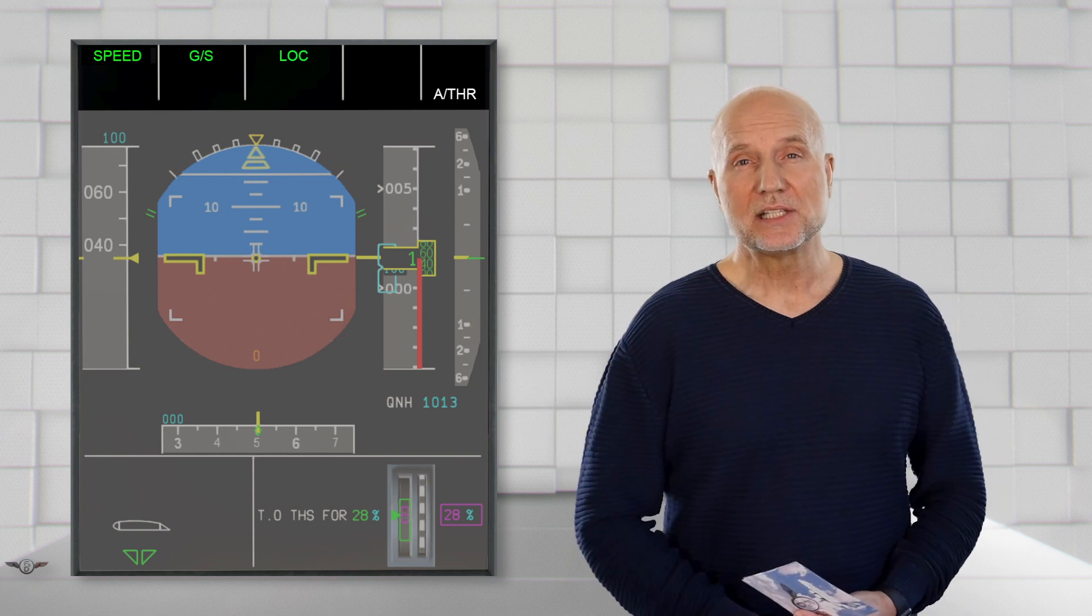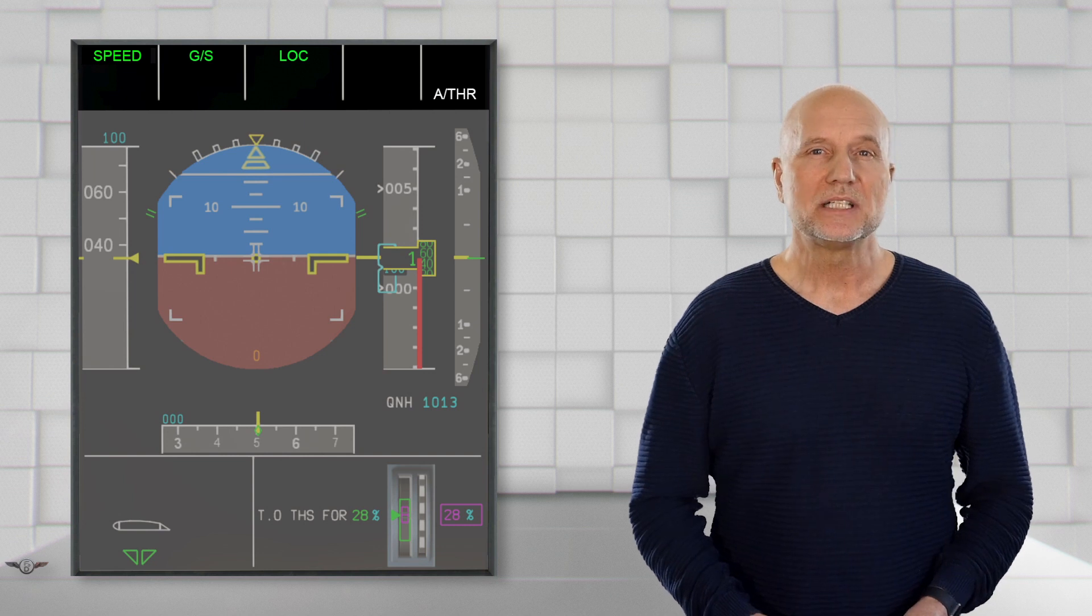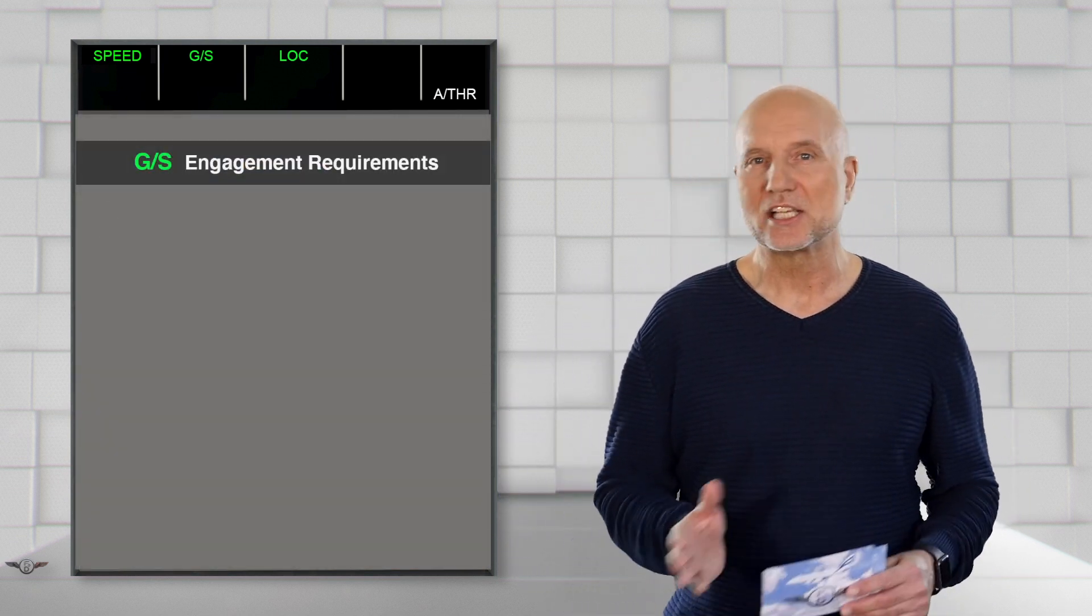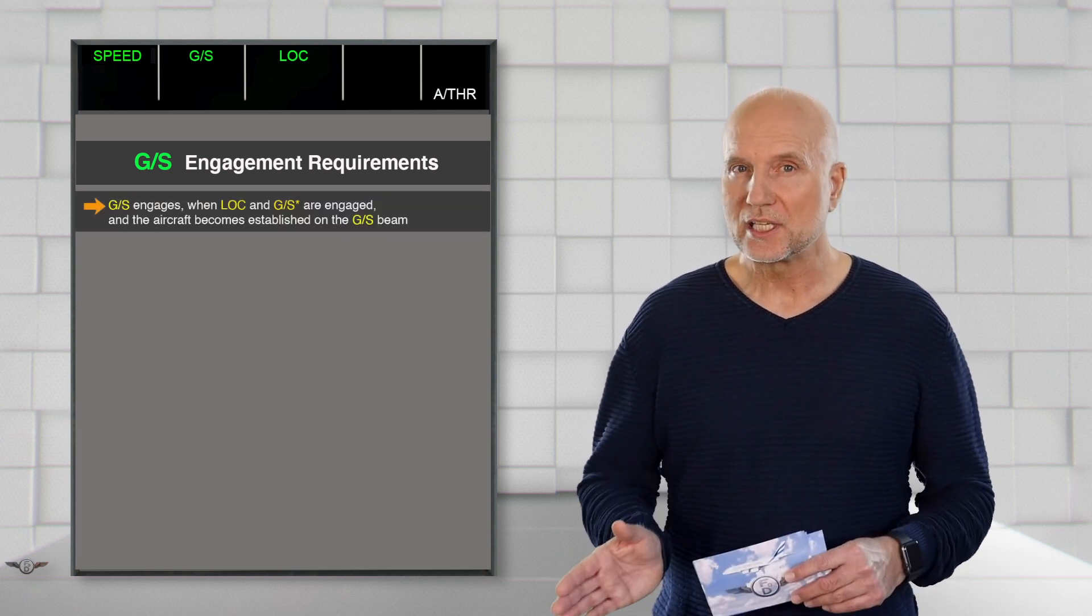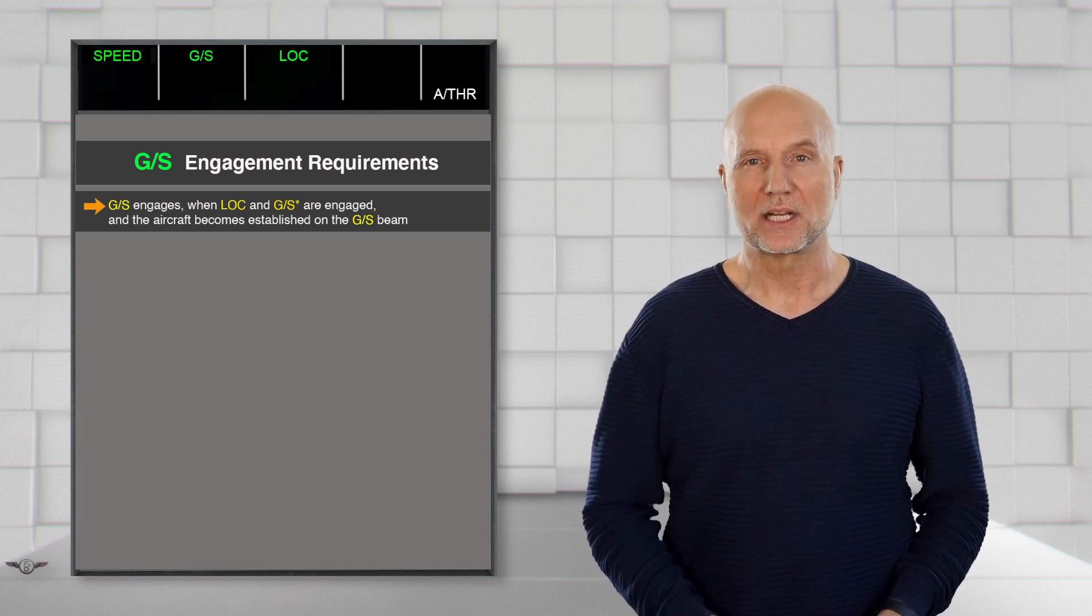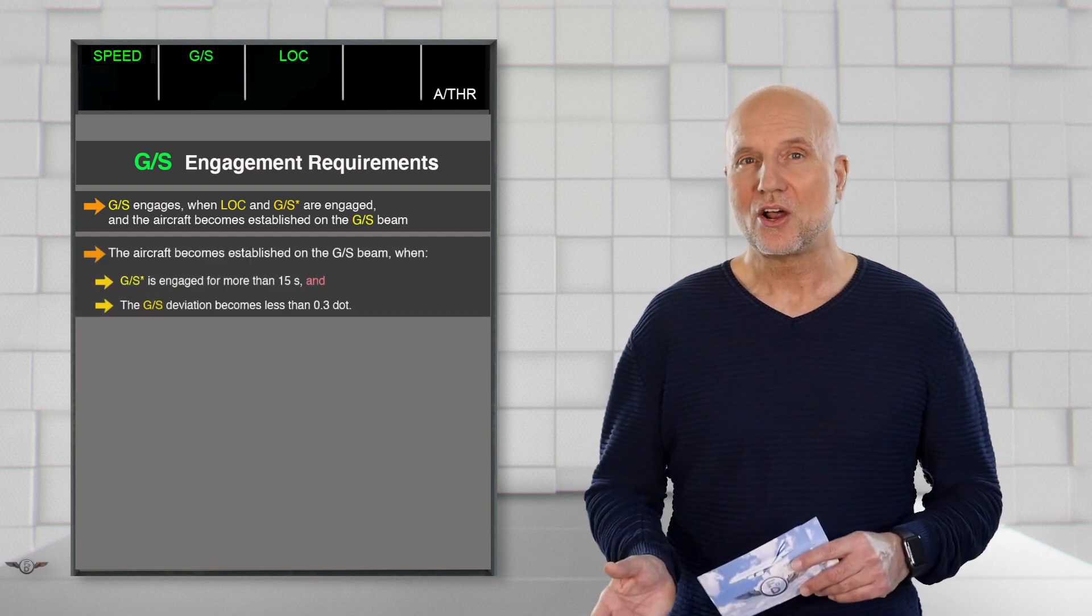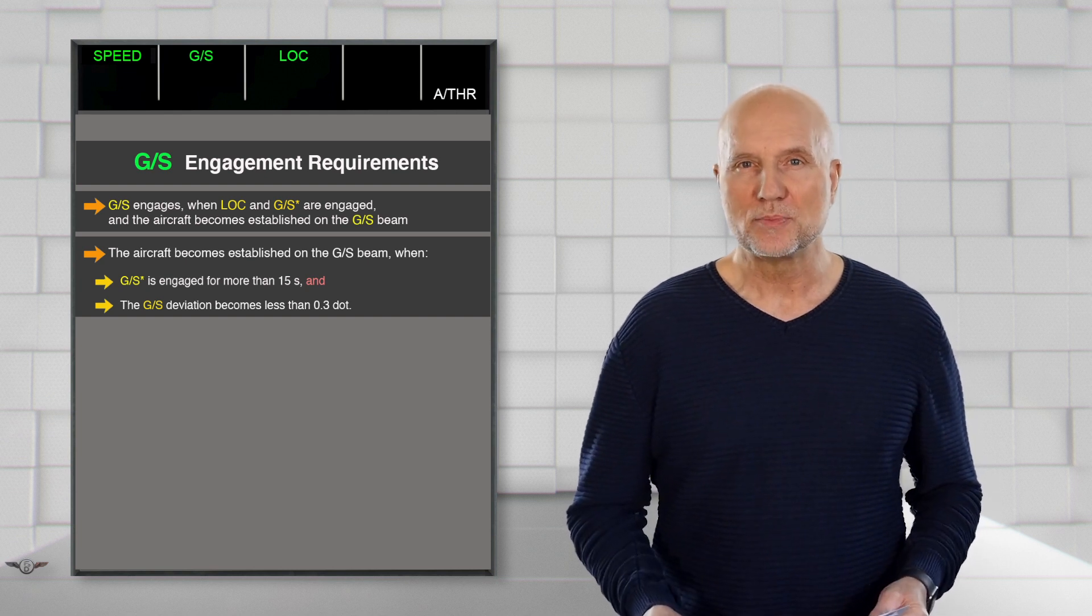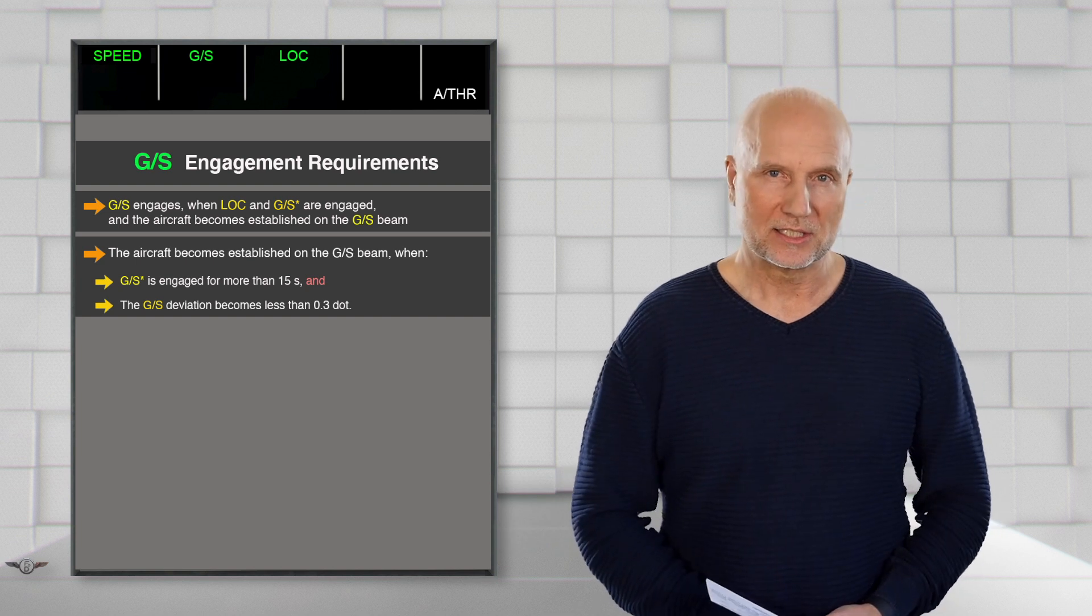GS is our next vertical mode. There are also a few conditions which need to be accomplished before GS star disengages and GS will engage. The glide slope engages when LOC or GS star are engaged and the aircraft becomes established on the glide slope beam. That requires that GS star has been engaged for more than 15 seconds and the glide slope deviation becomes less than 0.3 dot on the ILS glide slope scale.